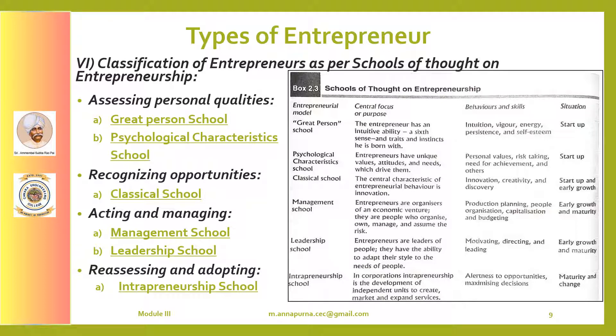The classical school of entrepreneurship holds that innovation, creativity or discovery are the key factors underlying its body of thought and research. In this view, entrepreneurship refers to the process of creating an opportunity, or the opportunity-seeking style of management that sparks innovation. The critical aspect of entrepreneurship is in the process of doing rather than owning.